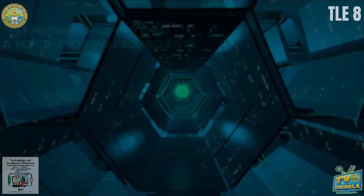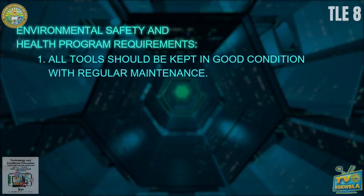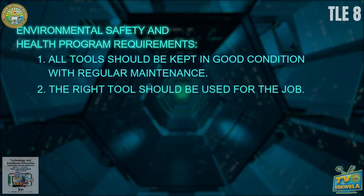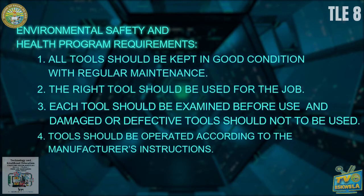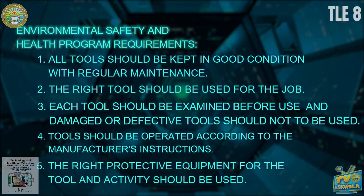The environmental safety and health program requires the following. First, all tools should be kept in good condition with regular maintenance. Second, the right tools should be used for the job. Third, each tool should be examined before use, and damaged or defective tools should not be used. Fourth, tools should be operated according to the manufacturer's instructions. And lastly, the right protective equipment for the tool and activity should be used.